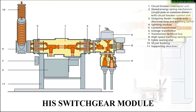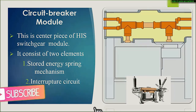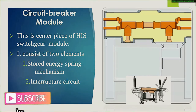Now we will see the different components one by one. The first and very important component of any substation is the circuit breaker module, which is the centerpiece of the HIS switchgear module. In the small diagram, the orange space shows where the circuit breaker is located in the actual HIS module. It consists of two elements: a stored energy spring mechanism and an interrupter circuit. The stored energy spring mechanism provides the mechanical energy to open the circuit breaker.